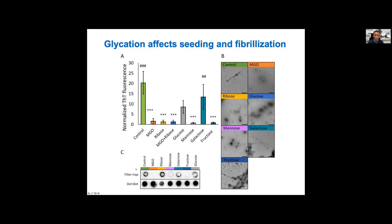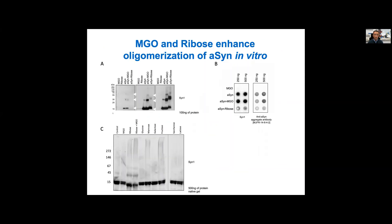This was confirmed using a filter trap assay showing that different types of glycated alpha-synuclein had different physical properties and different sizes that could be retained by a filter. We also confirmed this using native gels and antibodies like the Michael J. Fox antibody 14642, which detects aggregated alpha-synuclein — reactivity on a dot blot suggested these were aggregates increased in size but probably not mature amyloid fibrils.